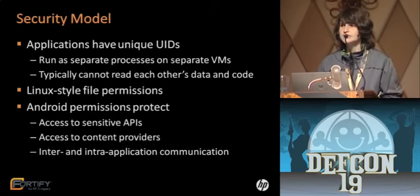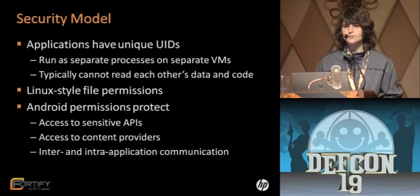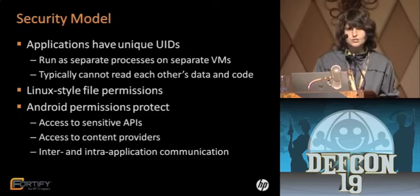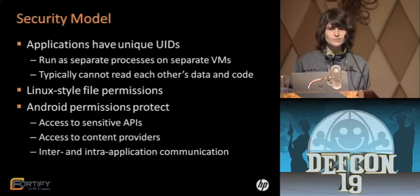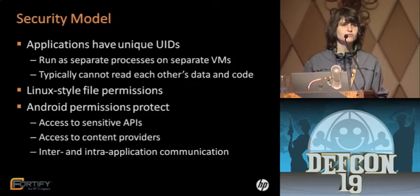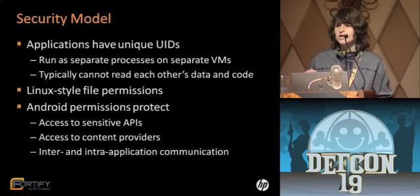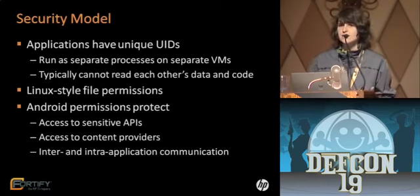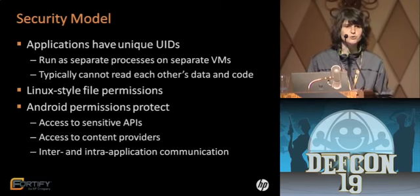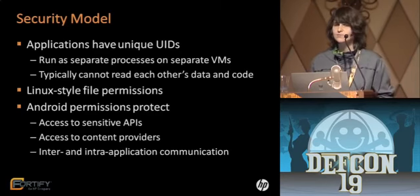Whenever you download and install an application, every application is given a unique UID, and therefore each application runs as a separate process in a separate VM. Typically, applications can't see each other's private data unless you do something unusual. Because the platform is built on top of Linux, Linux file permissions apply. What's specific to Android is the whole system of permissions provided by Google. Permissions allow you to protect access to sensitive APIs — things like location services, network, Wi-Fi, Bluetooth — and also protect access to content providers and inter- and intra-application communication.